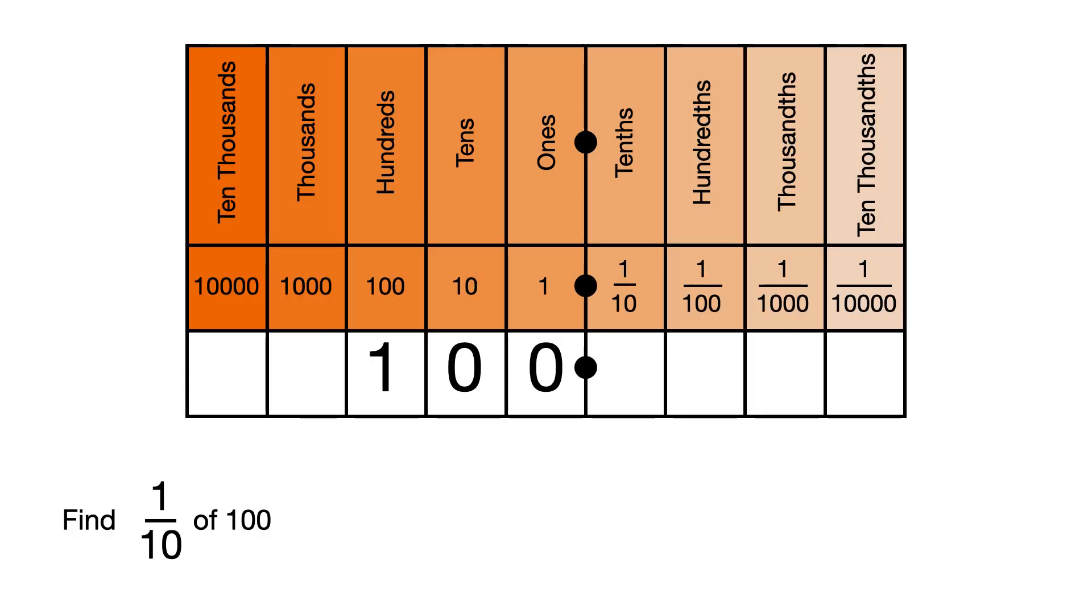Finally, find 1 tenth of 100, which is 100 divided by 10. To divide by 10, we move the digits one place each to the right. So 1 tenth of 100 is 10.